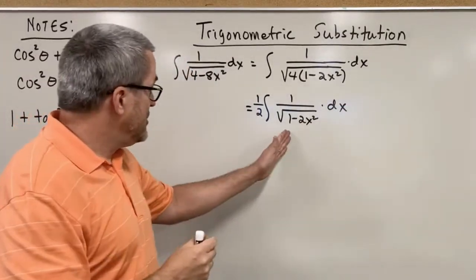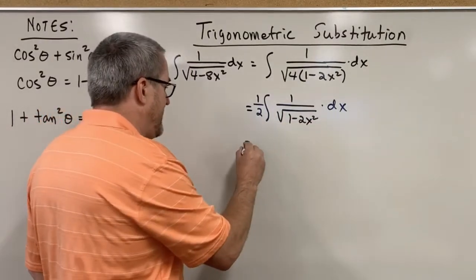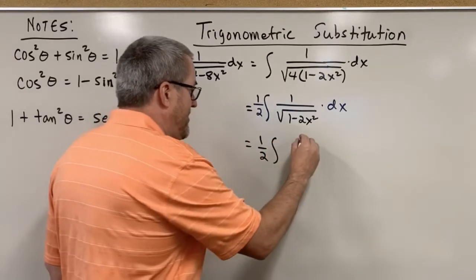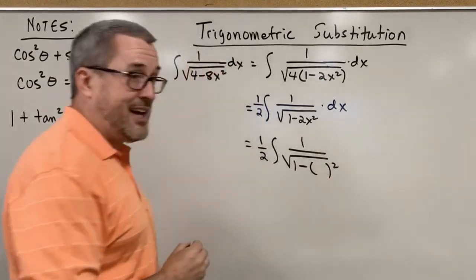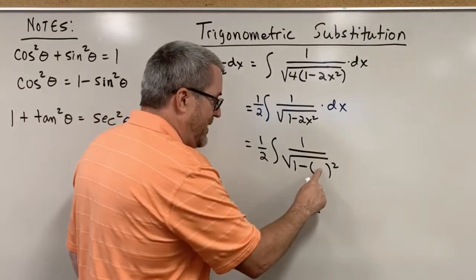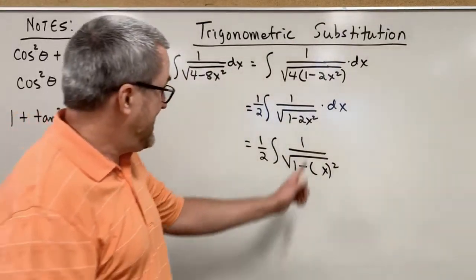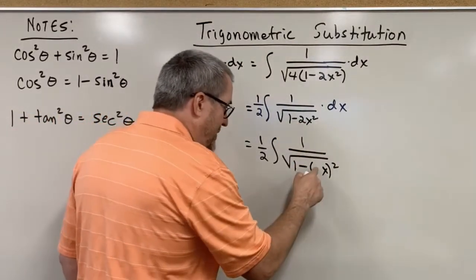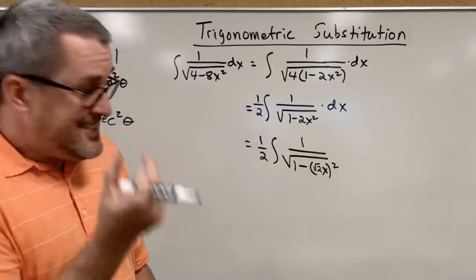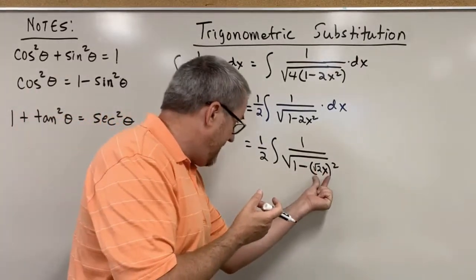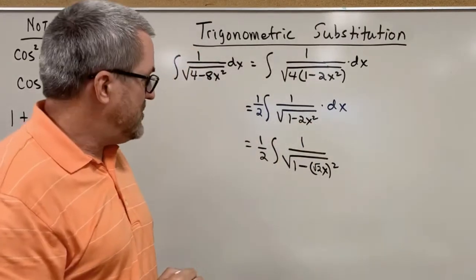So now we're even closer to our goal of having a 1 minus sine squared. Let's make it as clear as possible how that might happen. We want it to say 1 minus sine squared. So what quantity would you square to get 2x squared? The x squared gives us the x squared part, and for the 2 — what quantity would you square to get 2? Well, the square root of 2. So inside of there, if I think of it as 1 minus something squared, that something would have to be the square root of 2 times x, so that it's equivalent to 2x squared.